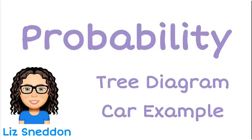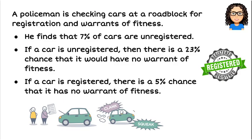Hi, this is Liz Sneddon. Today we're going to look at probability, specifically a tree diagram using the example of car registrations and warrants. Let's have a look at the problem.